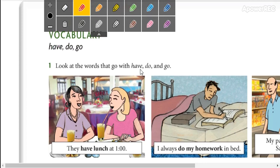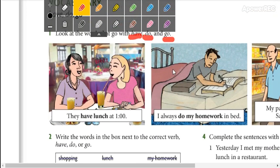...meaning of these: have - tener o ingerir cualquier alimento; do and go - hacer y también ir. For example, here they have lunch at one. Aquí qué significado tiene? Ingerir algún alimento o tener? If you're talking about lunch...